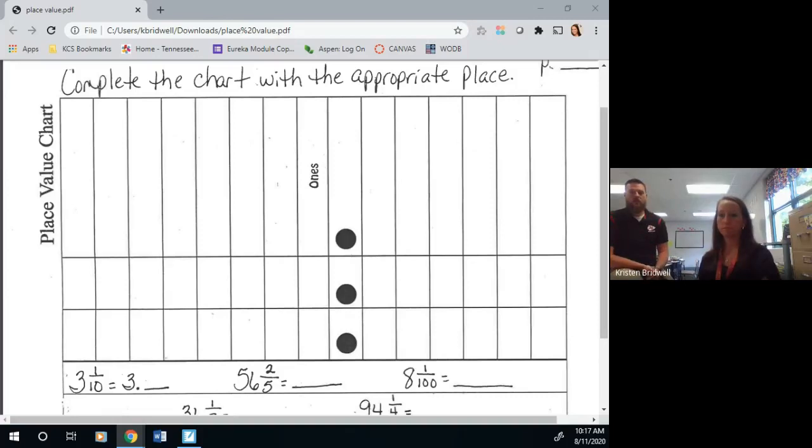On the left side of the decimal I want you to label something on your chart and we're gonna write the word whole. I want you to get your pencil, go to the top of your place value chart, and write the word whole. Anything to the left of the decimal is considered the whole. When you think of money, that's your dollar bills. When you think of cents, that's to the right of the decimal and that's going to be your parts.